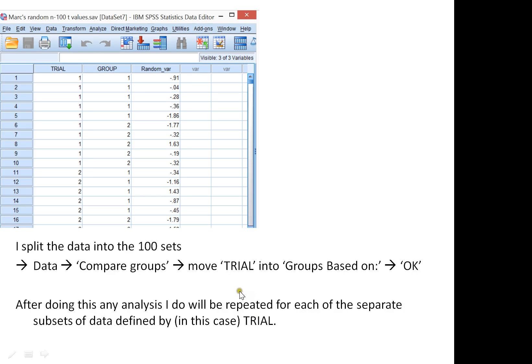I split the data into a hundred sets. What I'm doing really is I'm telling SPSS to run the same t-test, but it's going to compare the t-test results across, in this case, anything that's got a different number for trial. I do this by going Data, Compare Groups, I move Trial into the Groups Based On box, click OK, and from this point on any analysis I do will be done a hundred times. It's going to be done once for each of the values of trial.